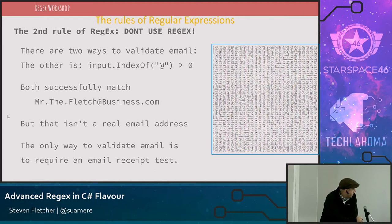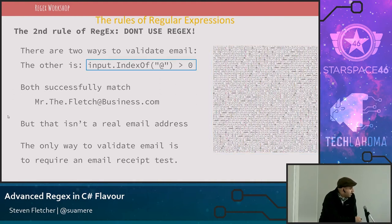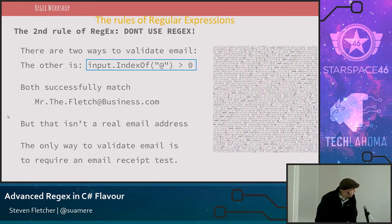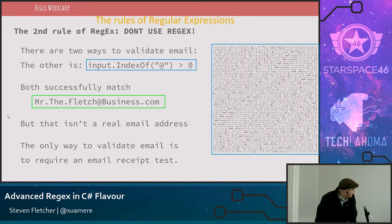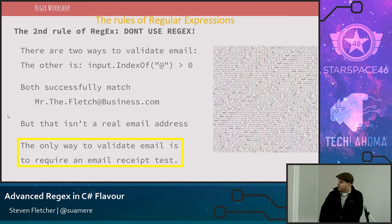That's what an email regex — part of an email regex — would look like. What I suggest instead is doing an indexOf '@', just to make sure there's an at-sign in there. That way you're ruling out someone putting in gibberish, or accidentally putting in their social security number or name, which doesn't have an '@' symbol. Both the RFC regex and the indexOf approach will successfully match 'MrTheFletch@business.com', but that isn't a real email address. The only way to validate email is to send an email receipt test.